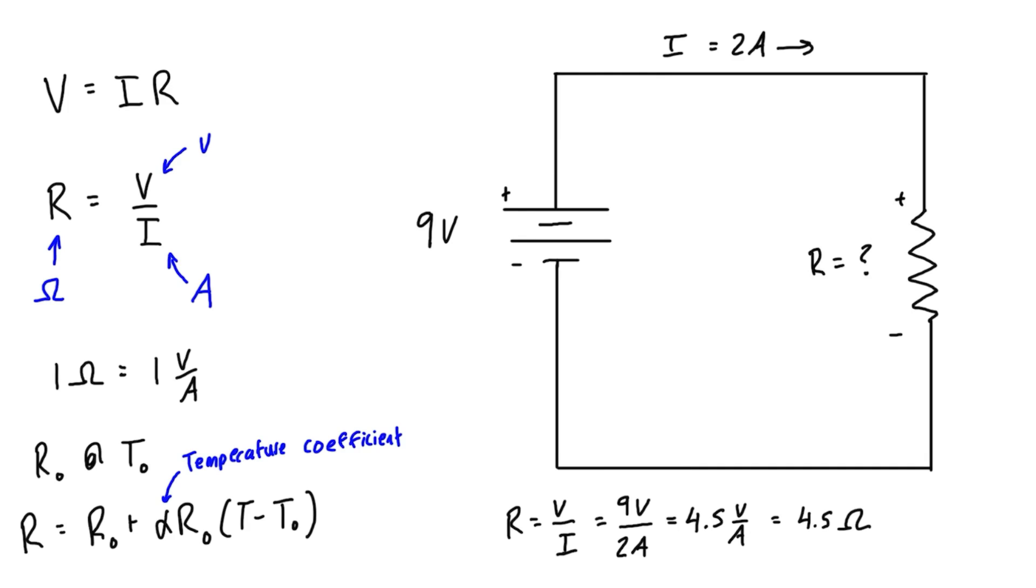So by putting a 4.5 ohm resistor in the circuit, it's going to limit the amount of current. So really, it forces the battery, the 9 volt battery, to only provide two amps of current. Whereas if it wasn't here, it essentially would be able to, like ideally, force an unlimited amount of current through the short circuit. So really what the resistor is doing is it's limiting the amount of current.